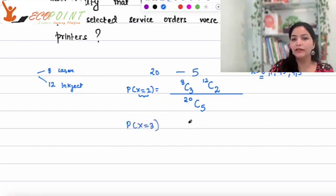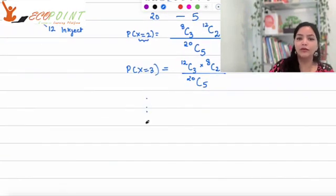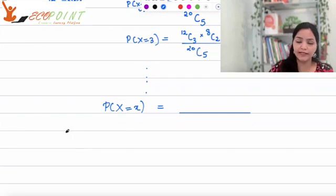Similarly, if x is equal to 3, then that would imply again 20 choose 5. But this would mean that out of the 12 injects, 3 have been, any 3 have been selected, and simultaneously, of course, 2 have to be the laser one, so on and so forth. If we want to generalize this, we can write probability x is equal to x, where x the random variable stands for the number of injects selected out of the sample.